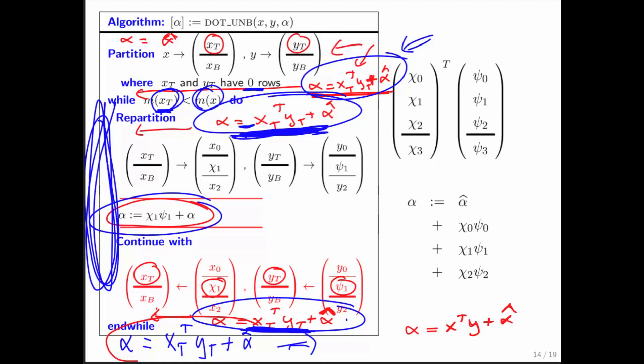What I'm trying to give you a feeling for here is how one might go about proving a loop correct. But that's not what Dijkstra wanted. What Dijkstra wanted us to do was to derive the loop hand in hand with its proof of correctness. So let's have a look and see how we can do that next.